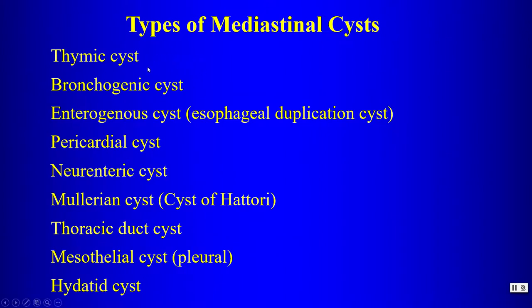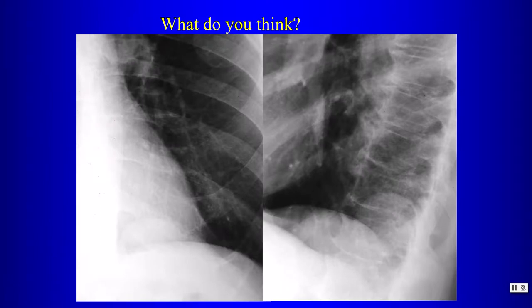A summary of mediastinal cyst types includes: thymic cysts, bronchogenic cysts, esophageal duplication cysts, pericardial cysts, neuroenteric cysts, Müllerian cysts (cyst of Fattori), thoracic duct cysts, mesothelial cysts, pleural cysts, and hydatid cysts from infection.